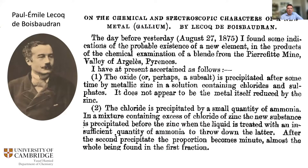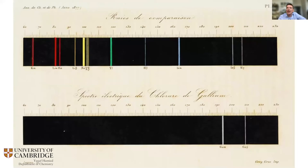Paul Emile Lecoq de Boisbaudran discovered one of the elements Mendeleev had predicted would be found using spectroscopy. This element was found in a zinc ore. He needed a much hotter flame — an electric arc rather than the Bunsen burner — to see the spectrum, and this was the key breakthrough.